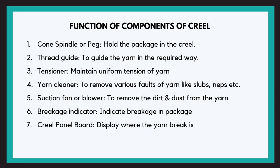The creel panel board displays where the yarn break is. In many systems a small bulb glows to indicate the worker, making it very easy to identify where the breakage is, and it saves time. The stop device is the device that stops the machine when the yarn breaks.